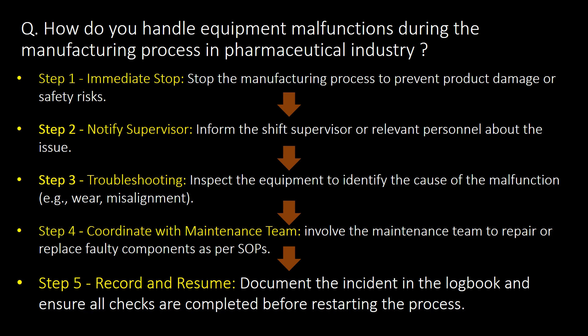Important question: How do you handle equipment malfunctions during the manufacturing process in the pharmaceutical industry? Here are the 5 steps commonly followed in case of equipment malfunctioning. Step 1 - Immediate stop: Stop the manufacturing process to prevent product damage or safety risk.